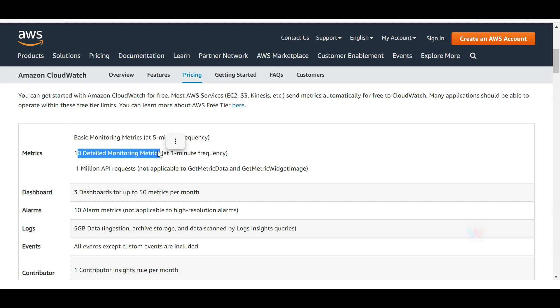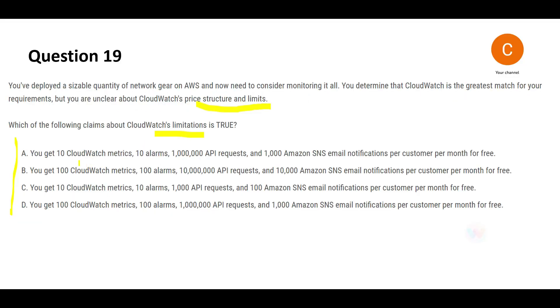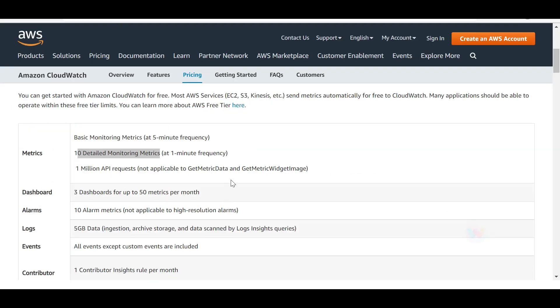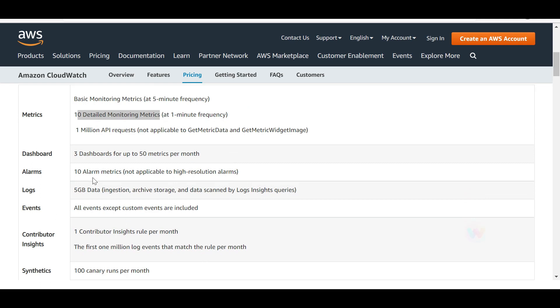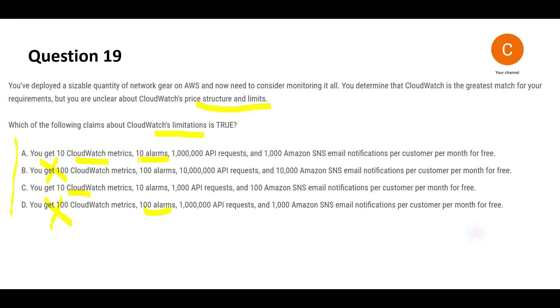If you see this documentation, it says 10 detailed monitoring metrics, so you have 10-year and 10-years. We would just clearly strike this out. B and D are wrong. Now there are 10 alarms here and there are 100 alarms here. You can pause this video here, read this section carefully. There are 10 alarm metrics, and hence A would be my answer because there are 10 alarm metrics.